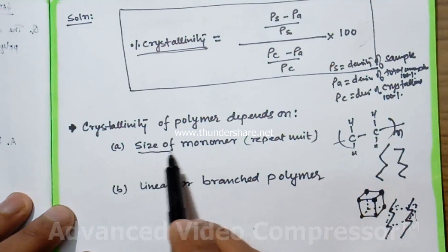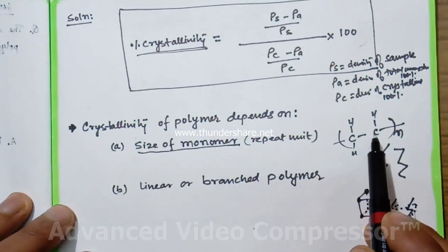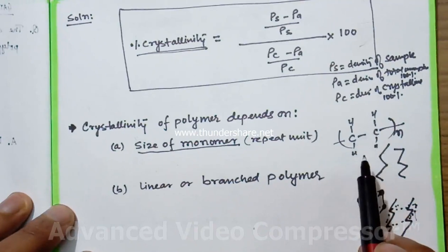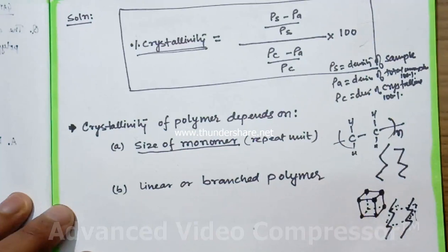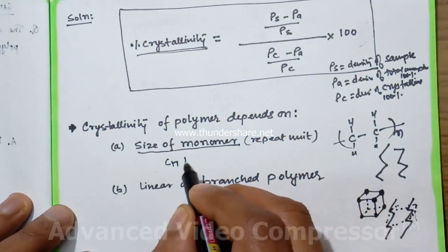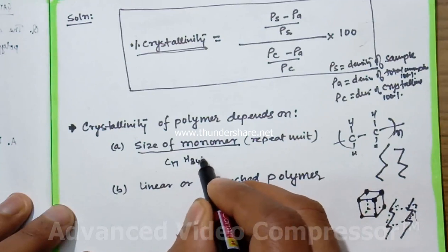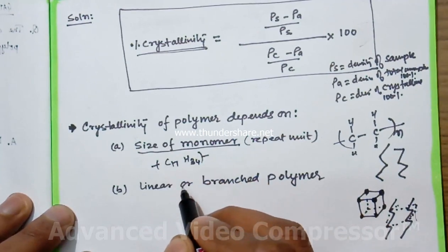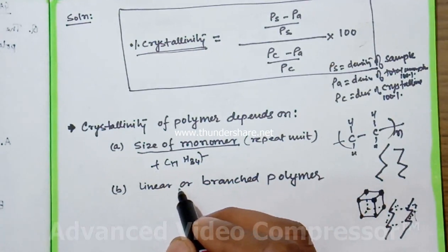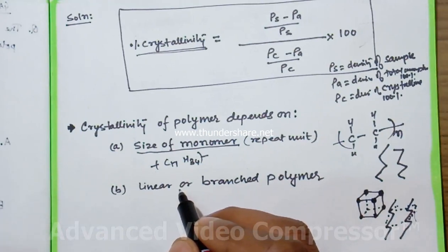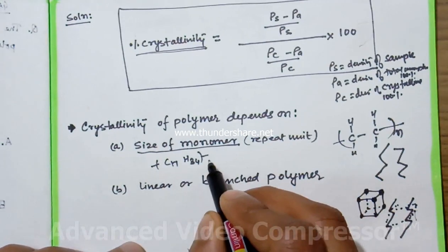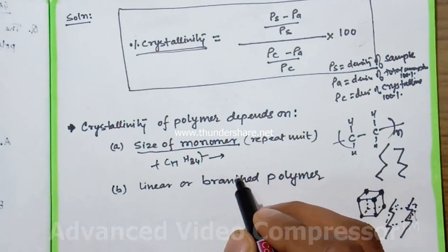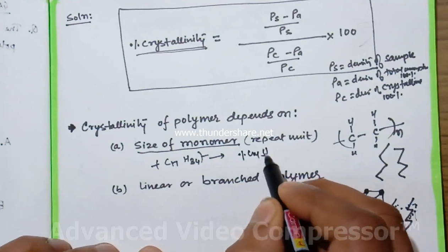The first is the size of monomer, the repeating unit. Here we have two carbon atoms and four hydrogen atoms, a small size monomer. But in case of a big size monomer like C17 H34, this is a very bulkier monomer. This bulkier monomer does not want to crystallize when we cool the polymer from liquid state. Whenever the size of the repeating unit increases, the percentage crystallinity in the polymer will decrease.